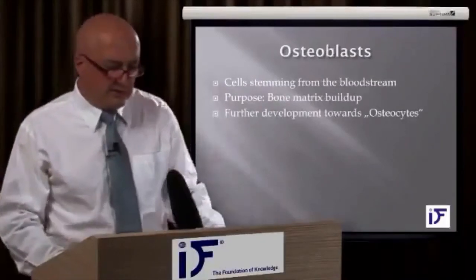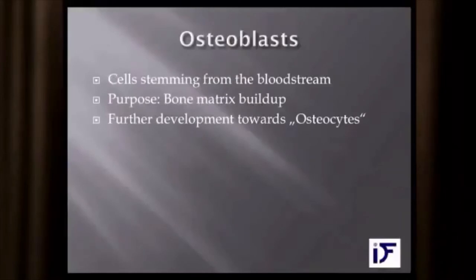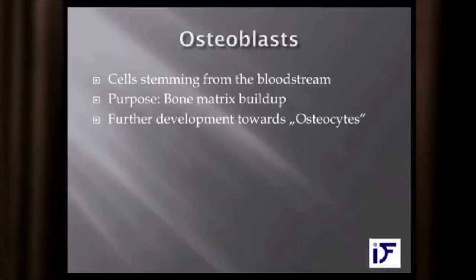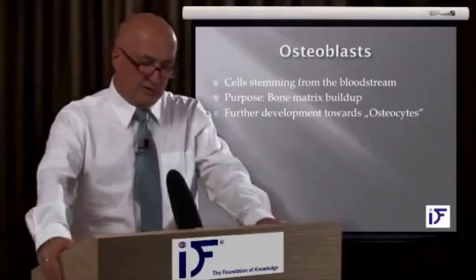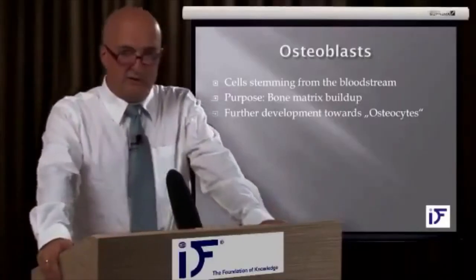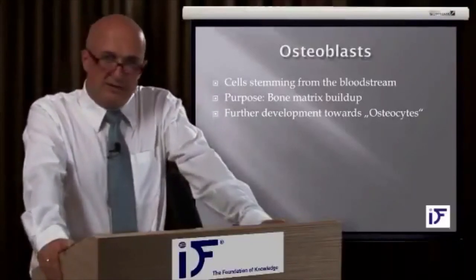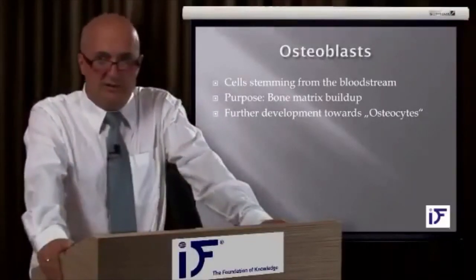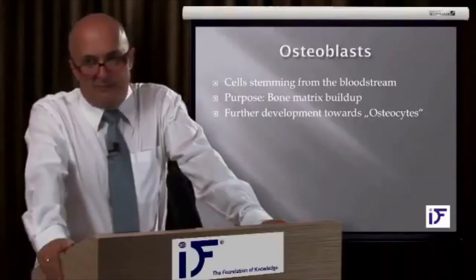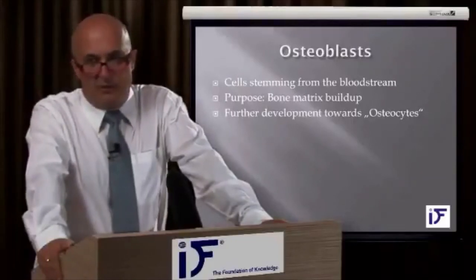Osteoblasts stem from the bloodstream, so they don't come directly out of the bone — they come from the bloodstream. The purpose of osteoblasts is to build up bone matrix, and they then develop further to osteocytes. It's important to understand that osteoblasts always stem from the bloodstream, while osteoclasts, the bone-resorbing cells, stem from the bone itself.